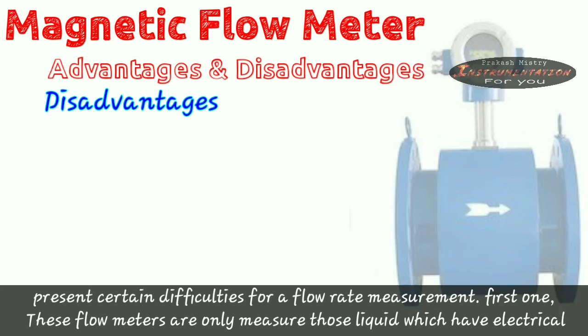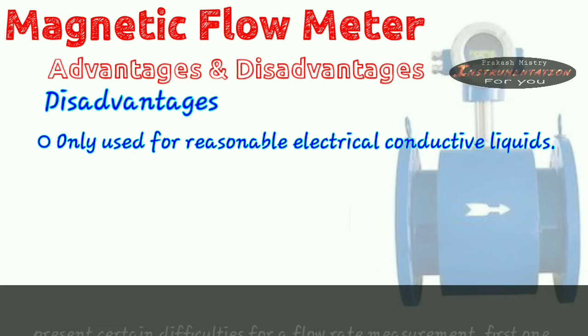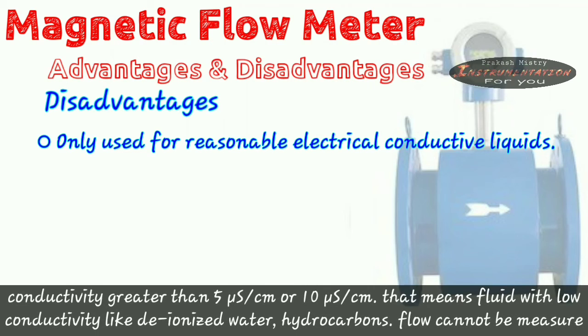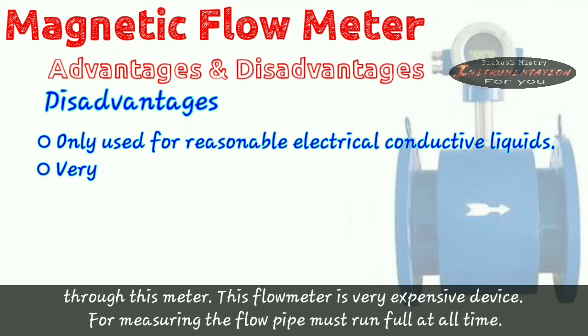First one, these flow meters only measure those liquids which have electrical conductivity greater than 5 microsiemens or 10 microsiemens. That means fluid with low conductivity like deionized water, hydrocarbons flow cannot be measured through this meter.